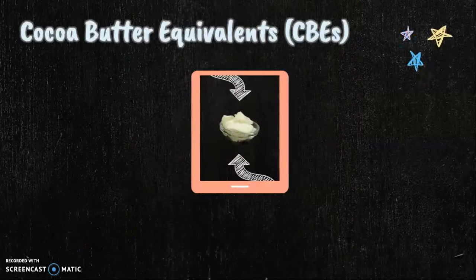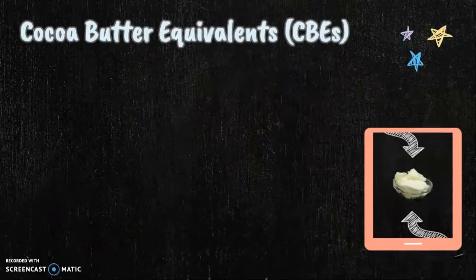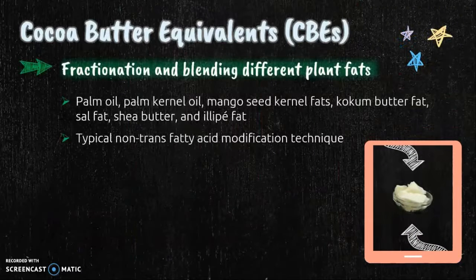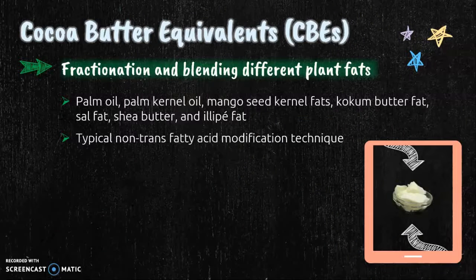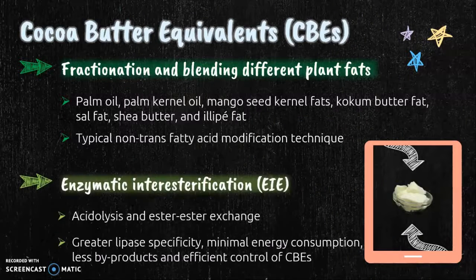Cocoa butter equivalents can be produced by fractionation and blending of different plant fats such as palm oil, palm kernel oil, mango seed kernel fats and other fats. This method is a typical non-trans fatty acid physical technique. However, the use of enzymatic interesterification techniques such as acidolysis and ester-ester exchange are better due to greater lipase specificity, minimal energy consumption, fewer byproducts and efficient control of the fat.